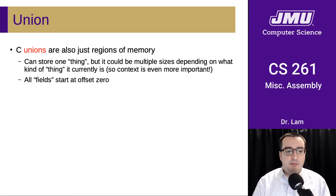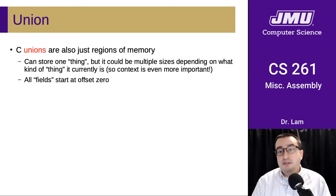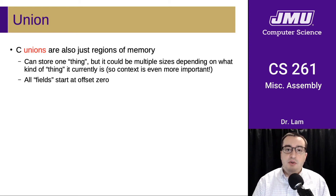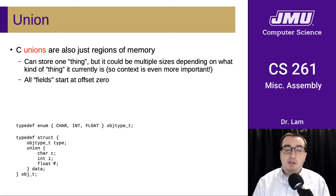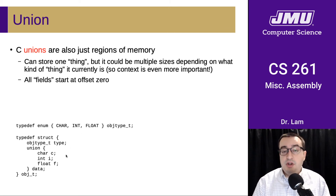A C union is also just a region of memory. It only stores one thing, but that thing could be multiple sizes depending on its type. Context is even more important with unions because unless you know what kind of thing is stored, you don't really know how to interpret the bits. All of the fields start at offset zero. For instance, if we have a struct with a union inside it that stores a char and a float, the value could be any one of those types. So we often include a type field in the struct that says, at runtime, I'm currently storing either a char, an int, or a float. When we access the data inside the union, we check its associated type field and use the corresponding field accessor.